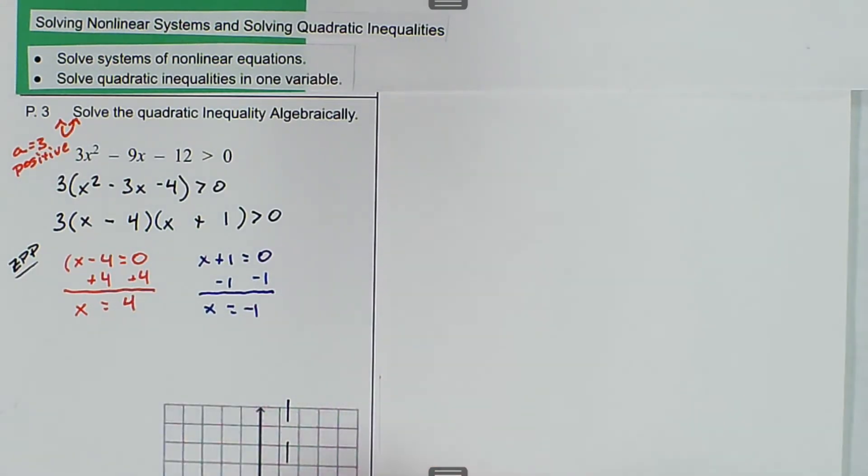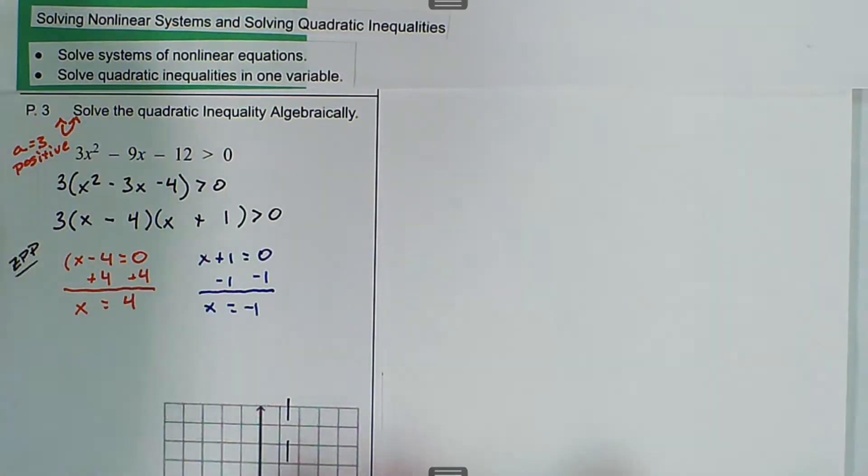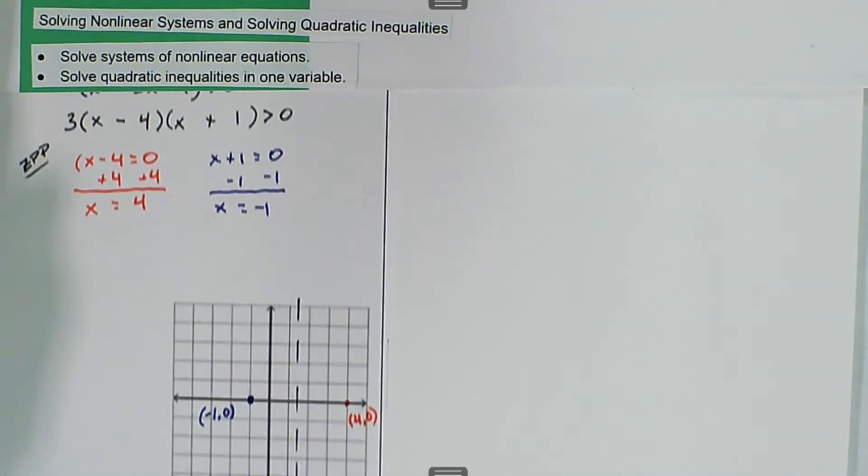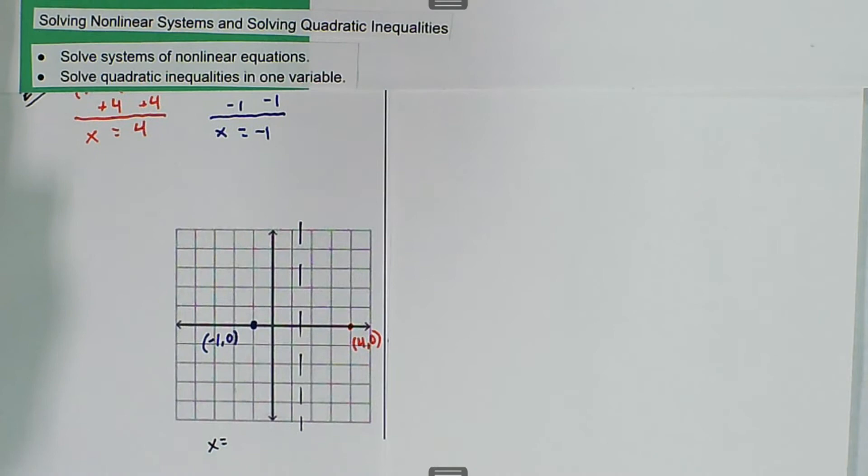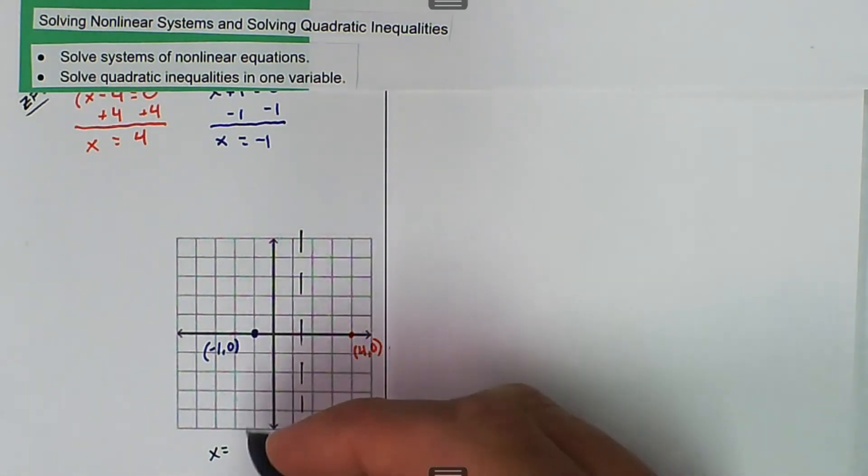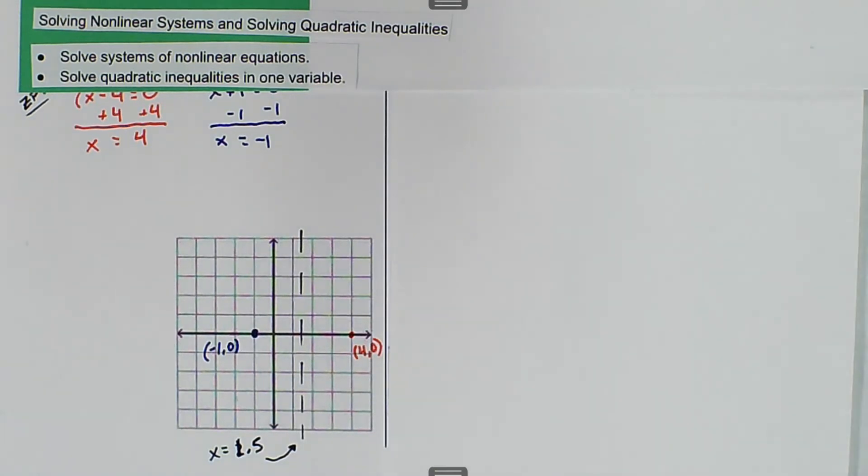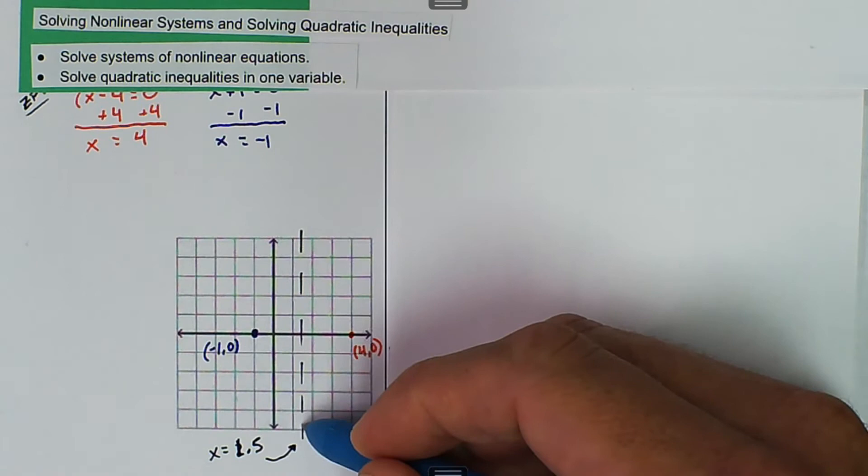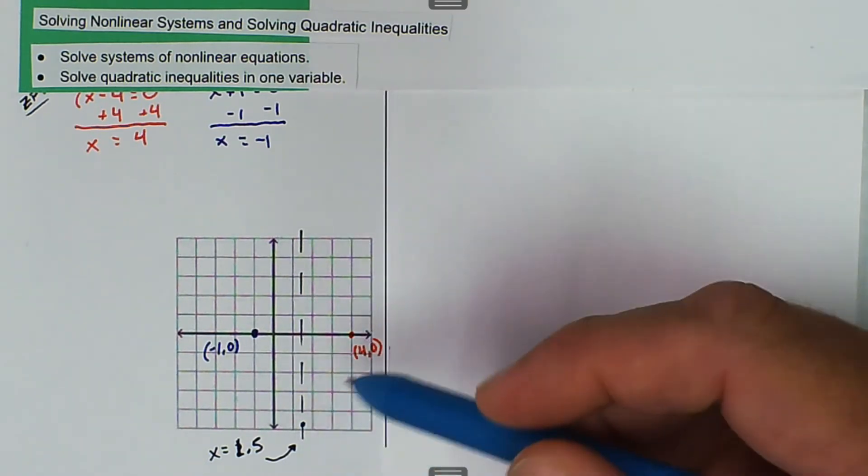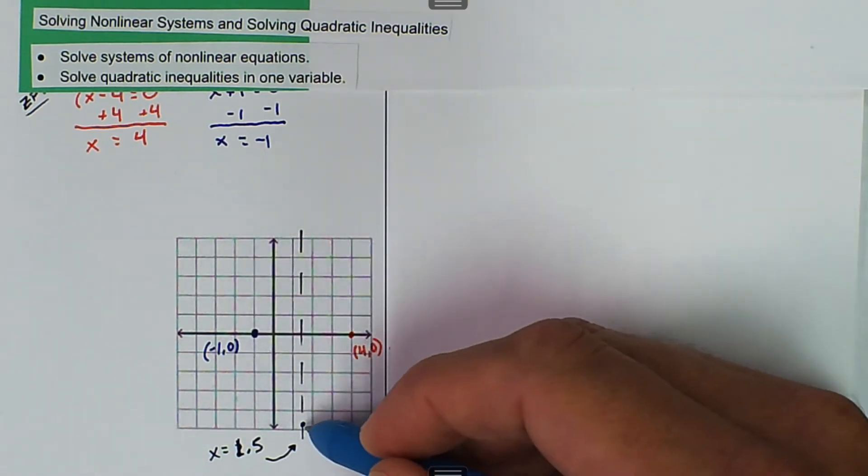So that's going to be when we graph those points. Then we have x is equal to 2.5 or 1.5, x is equal to 1.5. And then we know that our vertex is going to be somewhere on here. We haven't calculated exactly, but we know that it's going to open in this direction.